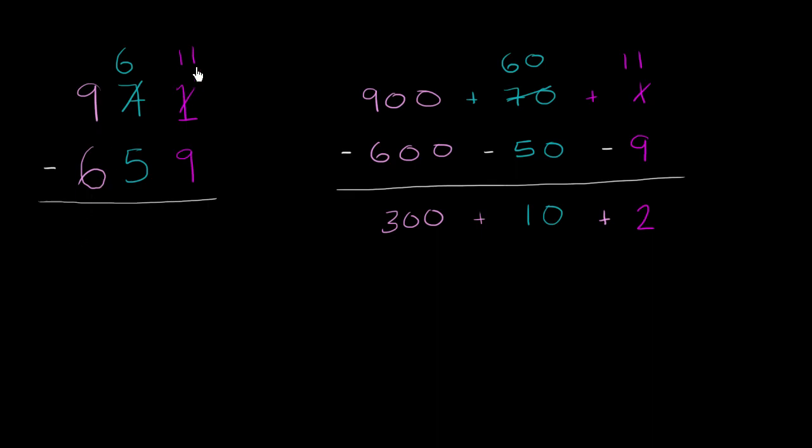Now we are ready to subtract. 11 minus 9 is 2. 6 minus 5 is 1. 9 minus 6 is 3. We get 312.